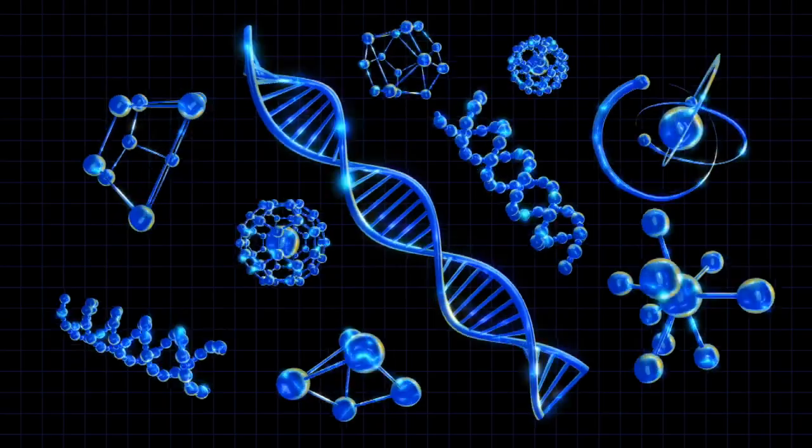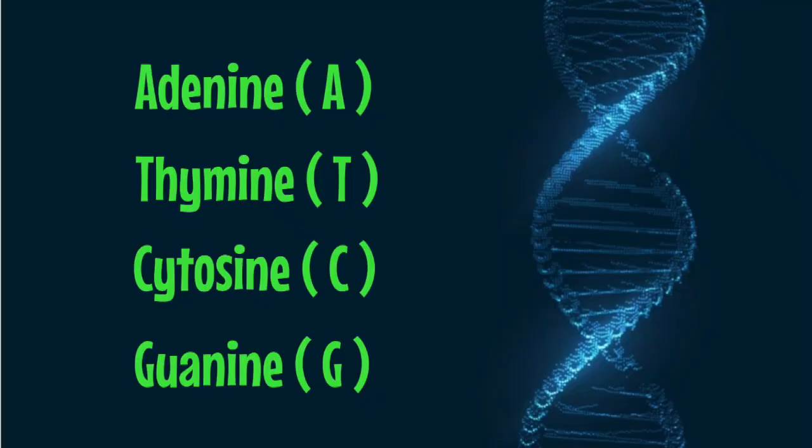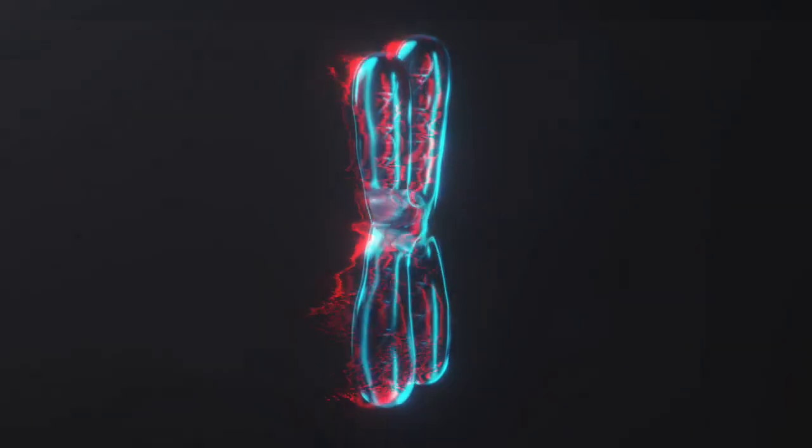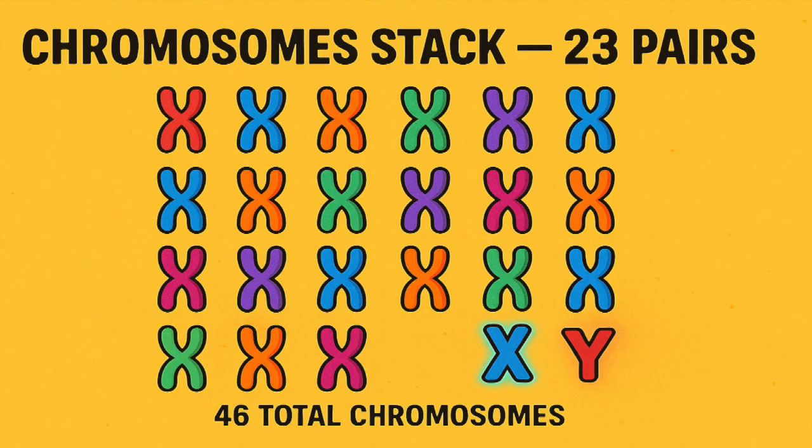Double helix twist and blueprints in the code, four bases lock and that's DNA mode. A's pair with T's, C's link with G's, that's the recipe of life flowing through the genes.